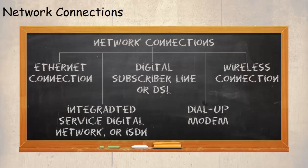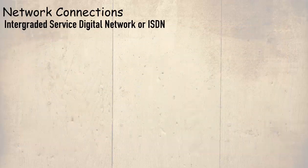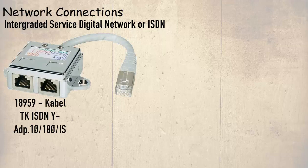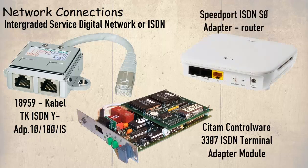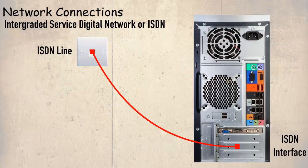The next connection we shall be looking at is probably something you will very rarely find in a modern office environment, but before the introduction of high speed internet technologies, the Integrated Service Digital Network was a popular way of achieving a reasonably fast connection to a remote network. The ISDN interface, or terminal adapter, would be installed in the host, similar to the Ethernet interface, or externally, and this was connected to an ISDN network, which is a specialized telephone line that is normally provided by the telecom's provider.